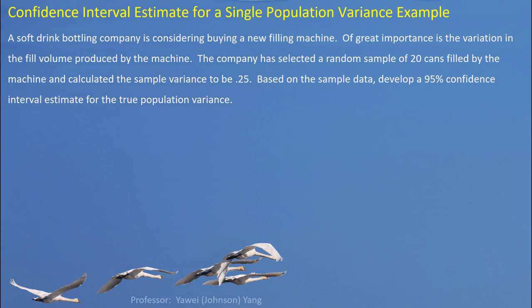A soft drink bottling company is considering buying a new filling machine. Of great importance is the variation in the fill volume produced by the machine. The company has selected a random sample of 20 cans filled by the machine and calculated the sample variance to be 0.25. Based on this sample data, develop a 95% confidence interval estimate for the true population variance. We have all the information needed: sample size, sample variance, and confidence level. We can derive degrees of freedom from sample size.